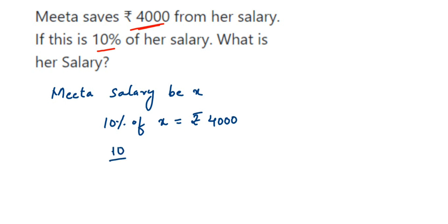Now, 10% means 10 upon 100 — 10 out of 100. Remove the percentage sign and divide by 100. 'Of' means multiplication. So 10/100 × X = rupees 4000.